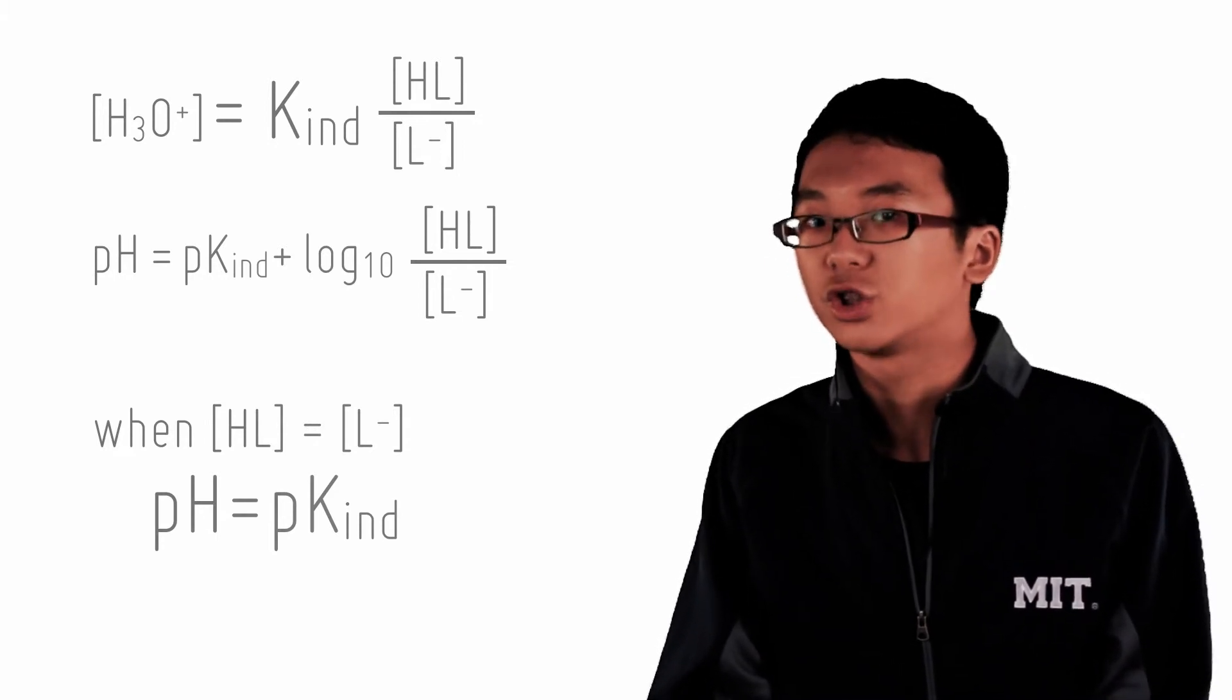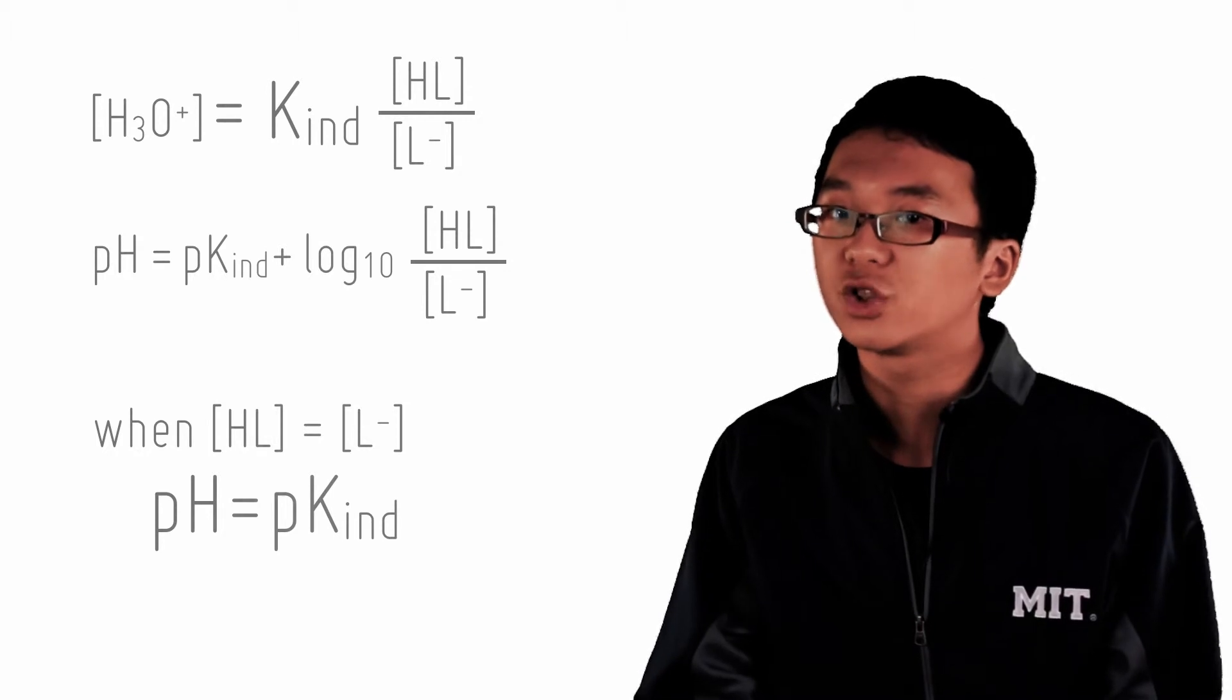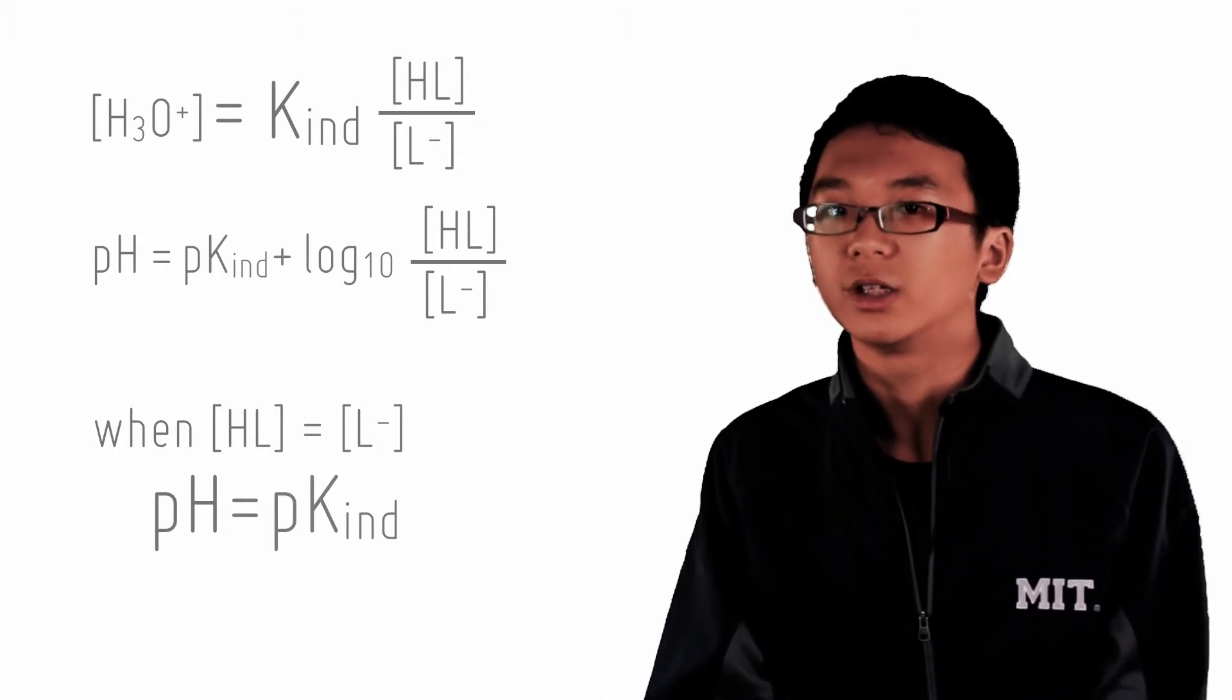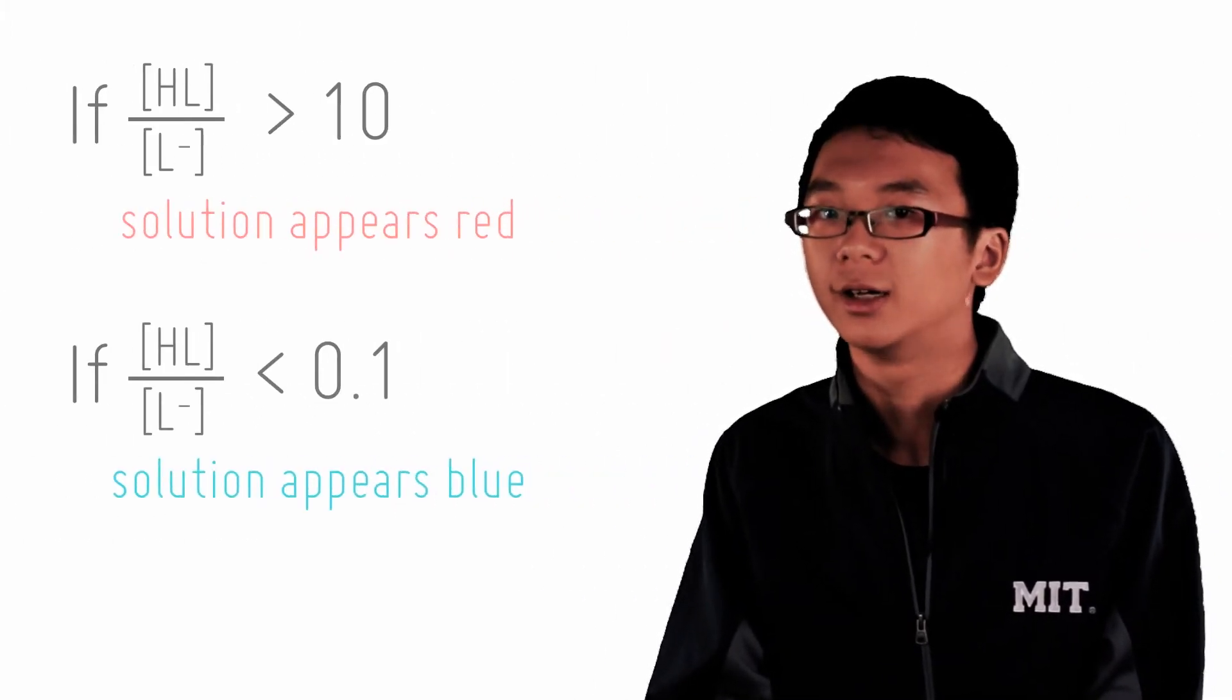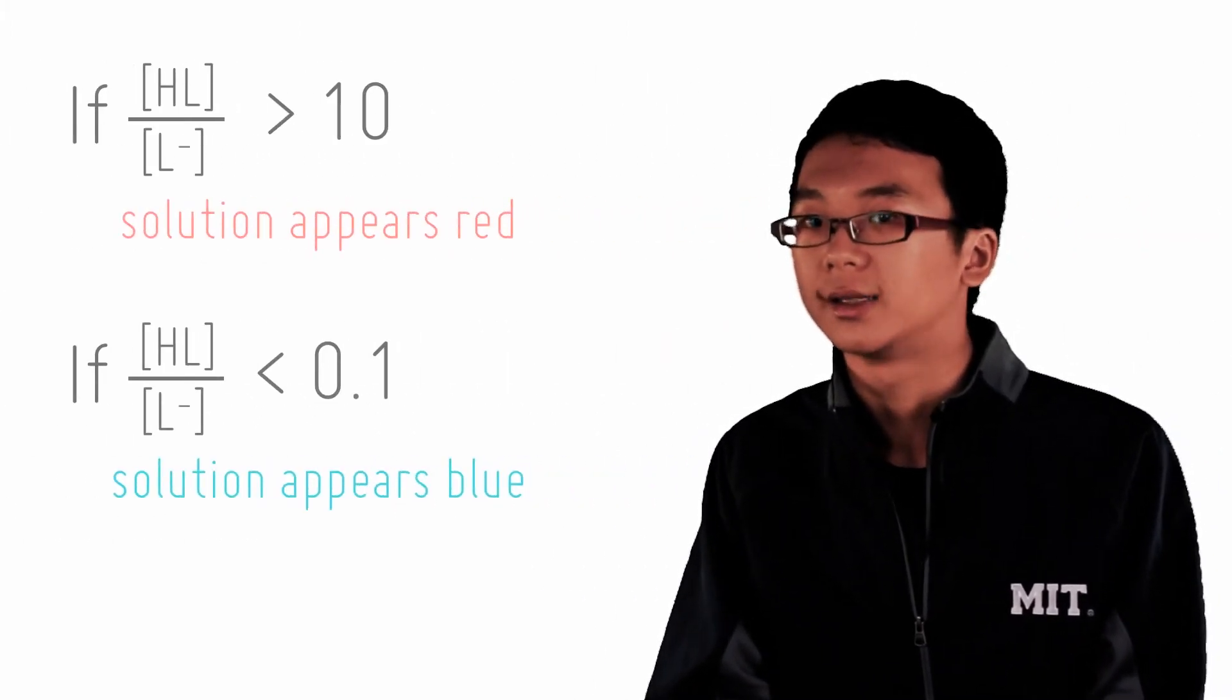How much must the concentrations of the indicator and the conjugate base change before we see one color and not the other? In general, we say that one concentration needs to be at least 10 times the other to form a sharp enough color change that our eye can see.